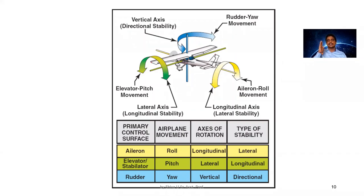As far as the rudder is concerned, the nose of the aircraft will be changing — left, right, left, right. This directional change is made from the nose of the aircraft.